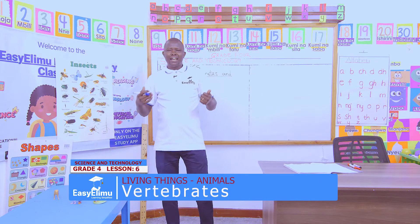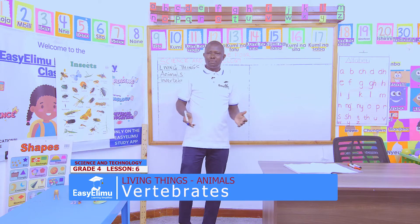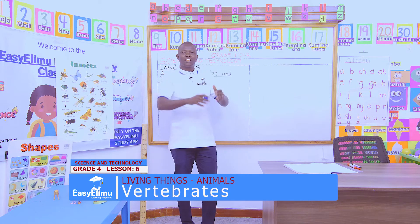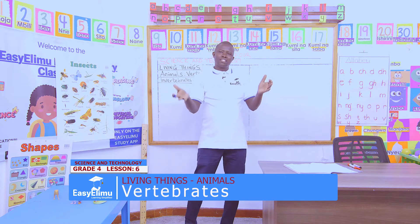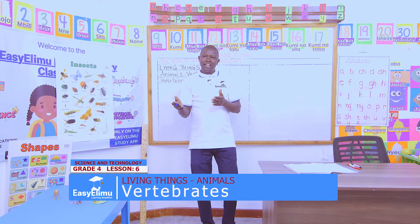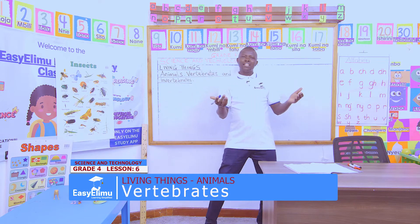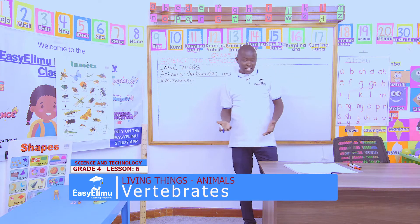Previously, we had learned about different types of animals, different examples of animals, and we classified animals as living things. In pairs, kindly, can you remind me of the animals we learned of?